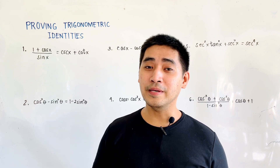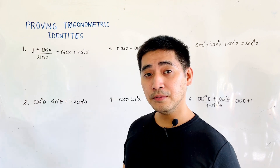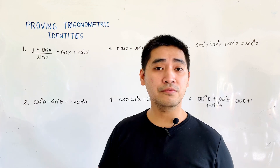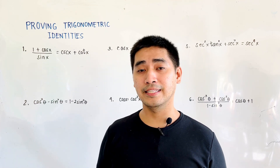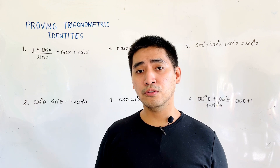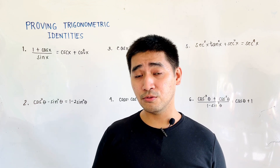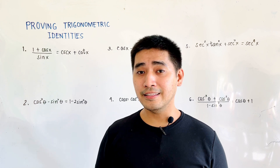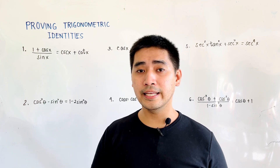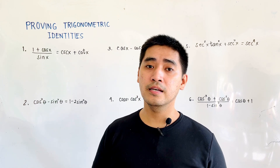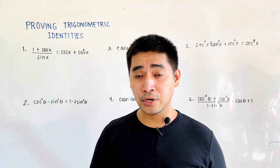We will be able to prove different examples because these are identities — we need to verify that the left-hand side is equal to the right-hand side. Last time, we were able to discuss one method, which is using substitution from fundamental identities, quotient identities, Pythagorean identities, and reciprocal identities.